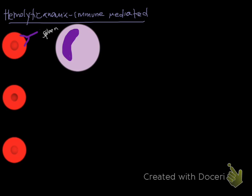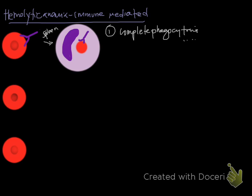Within the spleen, and potentially the liver and other organs, there are macrophages which phagocytize the red blood cells. Mechanism one is complete phagocytosis of the red blood cells. When this happens, heme is broken down into bilirubin from the heme protein — that's how you see hyperbilirubinemia. This complete phagocytosis is really extravascular hemolysis, occurring in the spleen, liver, etc., resulting in hyperbilirubinemia and bilirubinuria when levels are high enough.